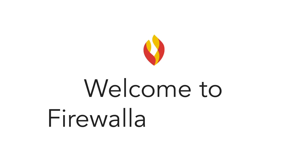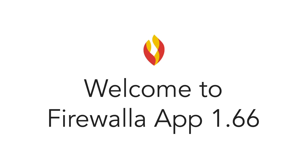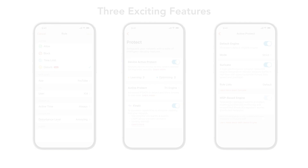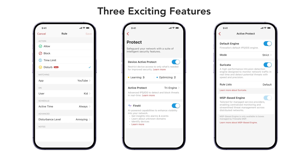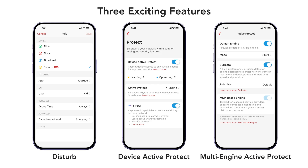Welcome to the Firewalla 1.66 app release. Thanks for choosing Firewalla. In this release, we're introducing three new exciting features: Device Active Protect to automatically protect your IoT devices, Disturb — a new tool for managing internet addiction, and Multi-Engine Active Protect with Suricata for enhanced signature-based detection.